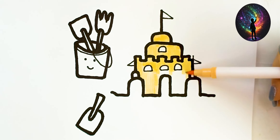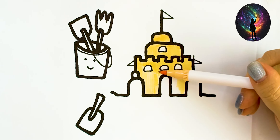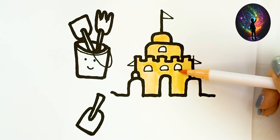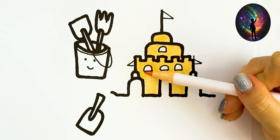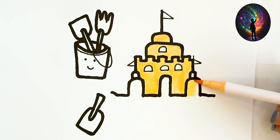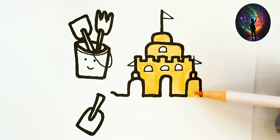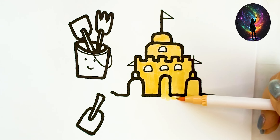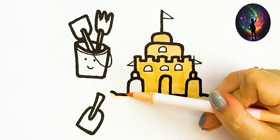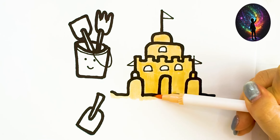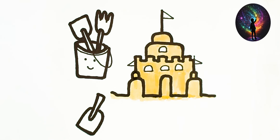Old MacDonald had a farm, E-I-E-I-O, and on his farm he had a cow, E-I-E-I-O, with a moo moo here and a moo moo there, here a moo, there a moo, everywhere a moo moo. Old MacDonald had a farm, E-I-E-I-O.